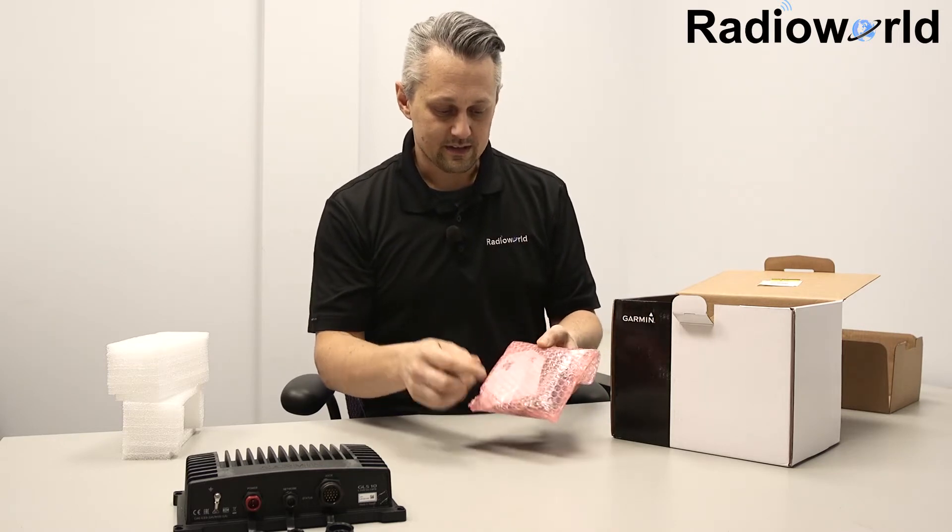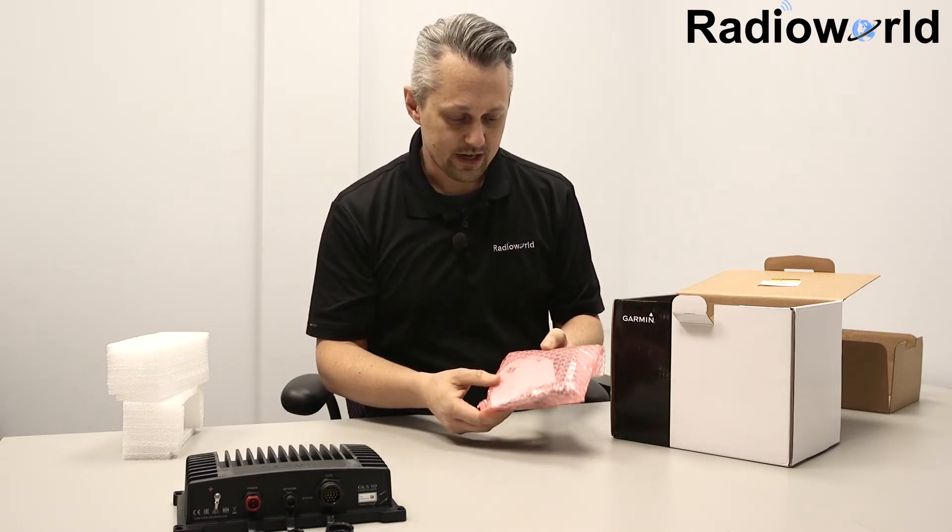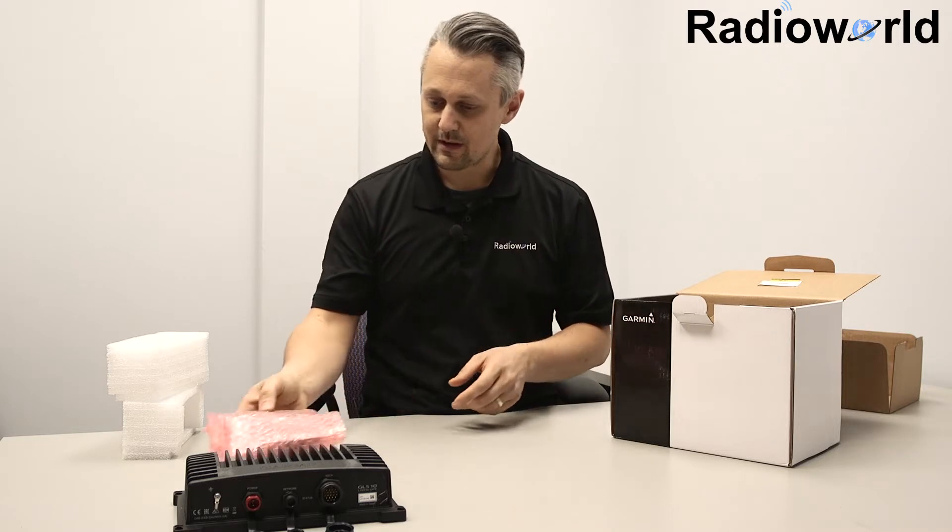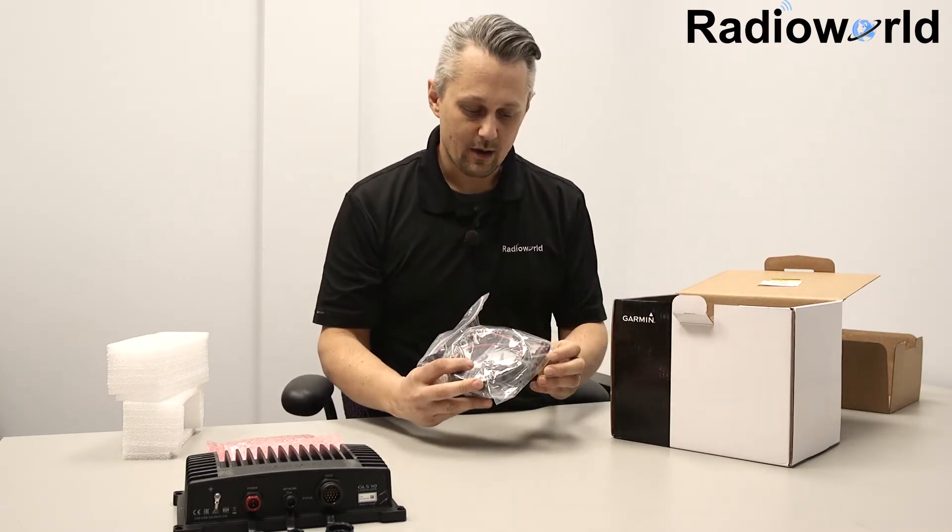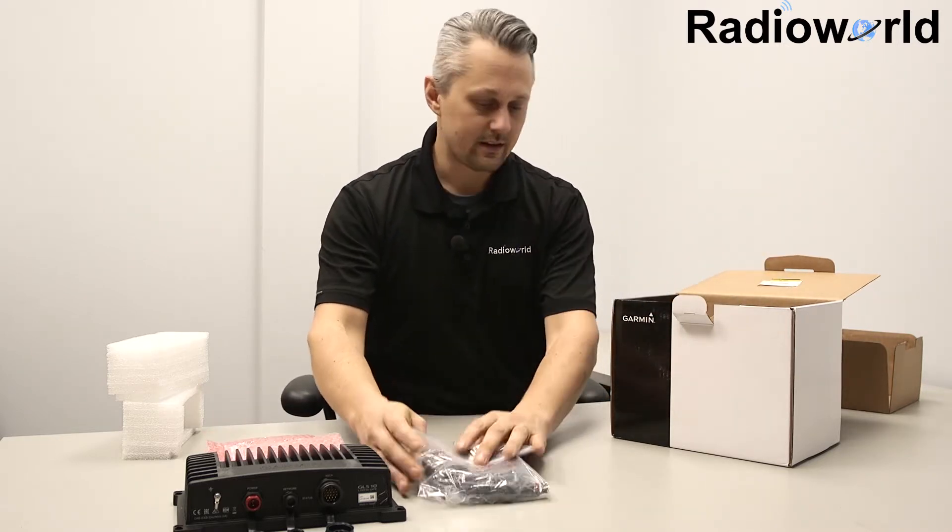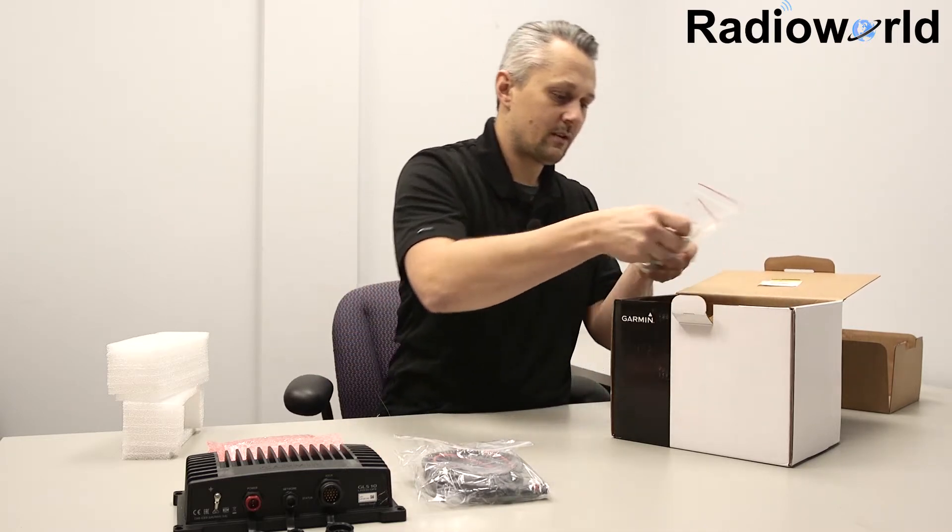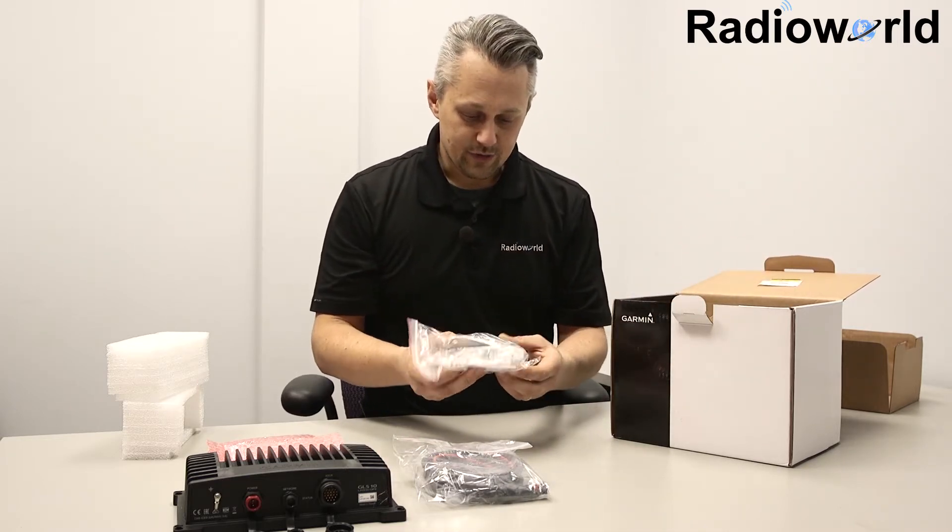Got our mounting hardware, this is a trolling motor barrel or shaft mount, and it comes with a hose clamp to mount it on there as well. Got our power cable for positive and negative. Looks like transom mounting hardware.